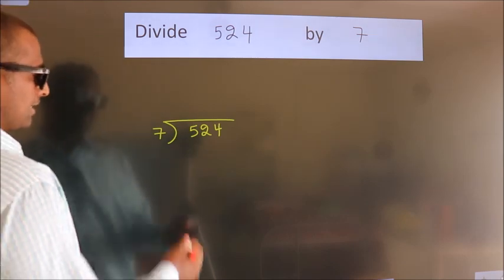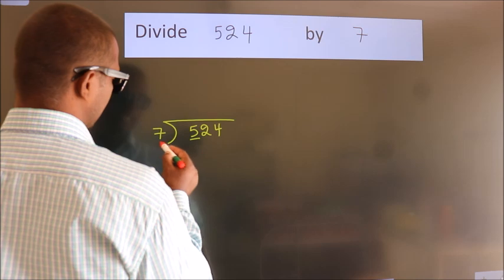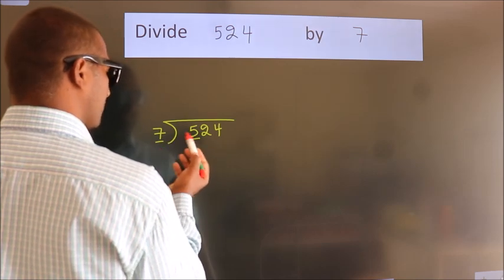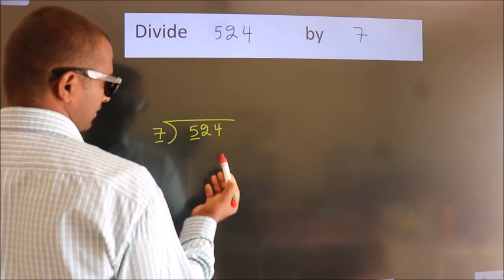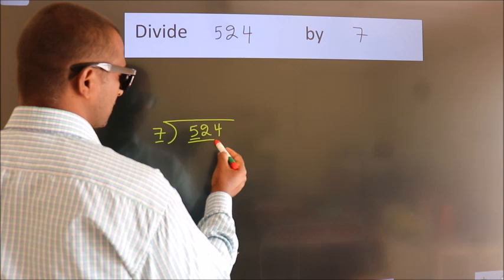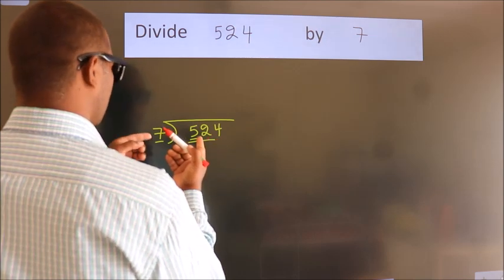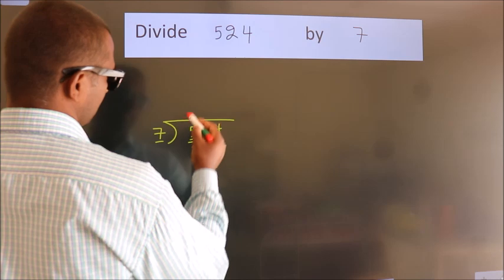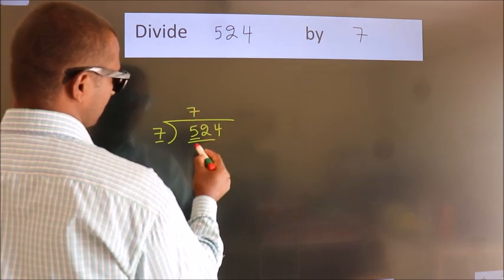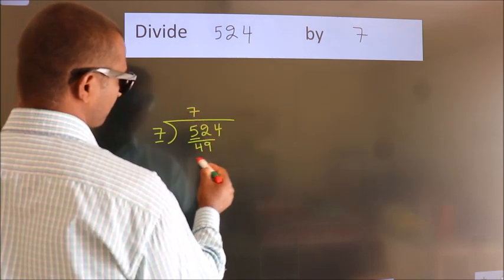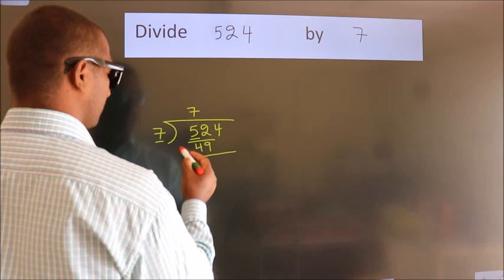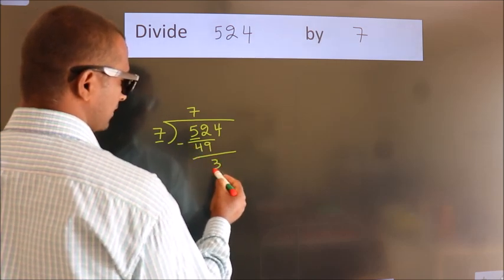Next, here we have 5, here 7. 5 is smaller than 7, so we should take 2 numbers: 52. A number close to 52 in the 7 table is 7 sevens, 49. Now we subtract and get 3.